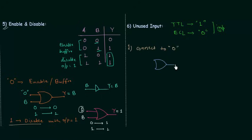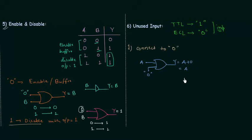For example, in a 2-input OR gate where A is the first input and the second input is floating, we connect it to 0. Then output Y equals A OR 0, which is simply equal to A. In the second way, we connect the unused input to one of the used inputs.